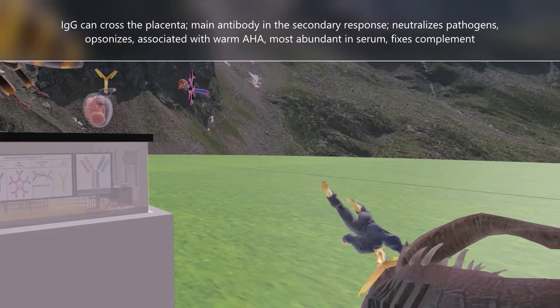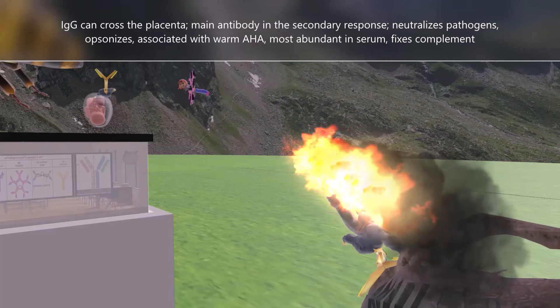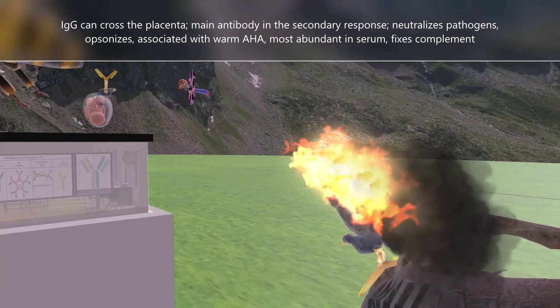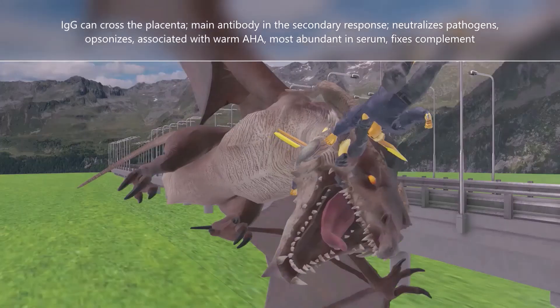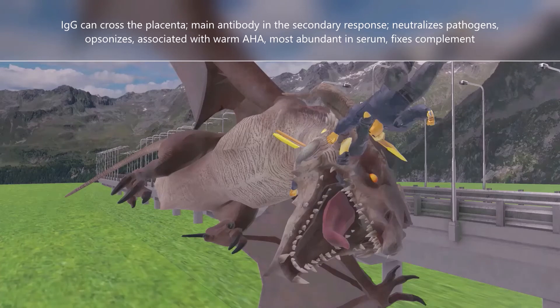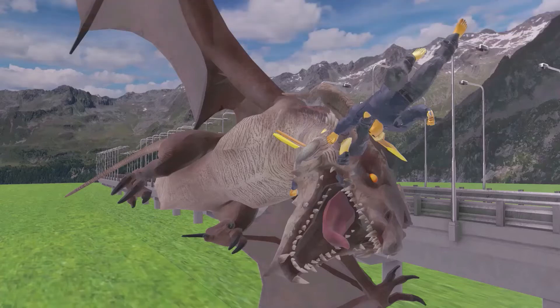The fact that he was going up through the roof reminds us of opsonization, as IgG opsonizes bacteria, which enhances phagocytosis. The fire he trails behind reminds us that IgG is associated with warm autoimmune hemolytic anemia. The various IgG characters remind us that IgG is the most abundant isotype in the serum. And finally, IgG, just like IgM, fixes complement — which is why this character also likes giving compliments, maybe even complimenting the dragon as it dies.